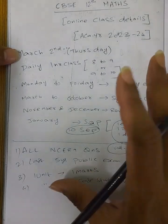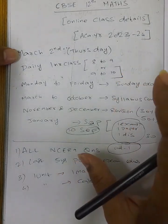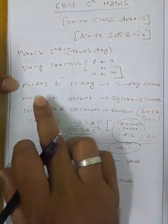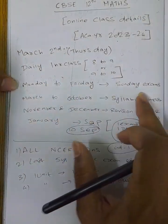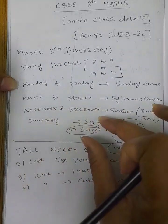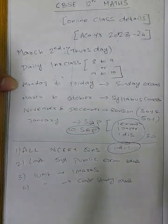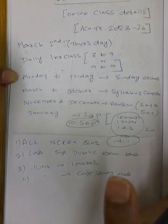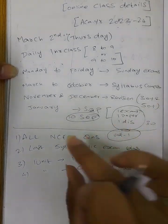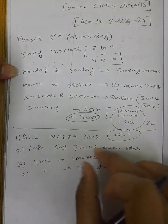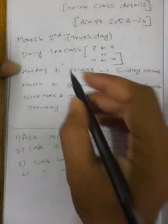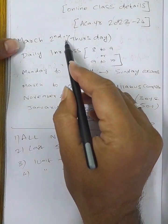If you want to join, you can join from October, November, or January. If you want to join for board exam preparation, you can cover the last 5 years of public exam questions side by side. Classes are structured according to the syllabus, completing one unit per week.